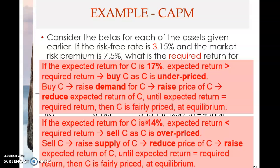The stock is overpriced. If the required return is higher than the expected return, it means the stock is overpriced or overvalued. I prefer the term 'overpriced' because value is intrinsic — you cannot overvalue something, but you can overprice it. When it's overpriced, people will sell; this selling pressure increases the supply of stock C, which reduces the price. When the price falls, the expected return goes up until it equals the required return.